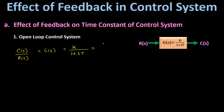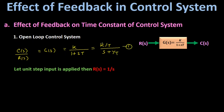Taking T common from the denominator, the transfer function becomes (K/T) divided by (s + 1/T) — let this be equation number 1. Now let us assume that a unit step input is applied to the system. Therefore the input R(s) will be equal to 1/s. We put R(s) = 1/s into equation 1, giving C(s) = (K/T) divided by s(s + 1/T).